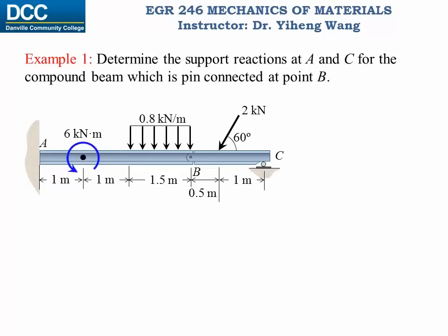In this example we have a compound beam made up of two members, A-B and B-C, which are pinned together at point B. We need to determine the support reactions at point A, a fixed support, and at point C, a roller support. Let's first treat this compound beam as one system and apply the force analysis method for rigid body equilibrium to see what happens.